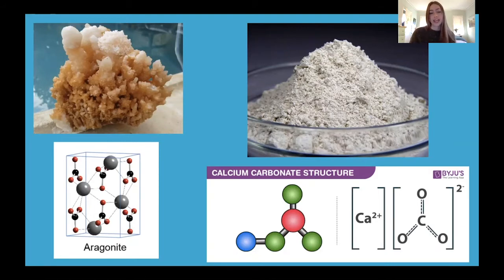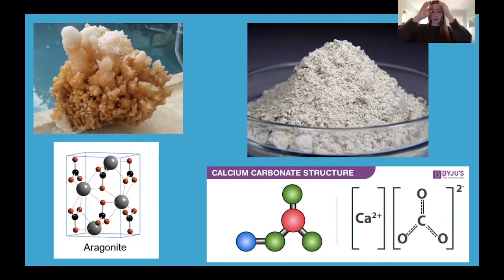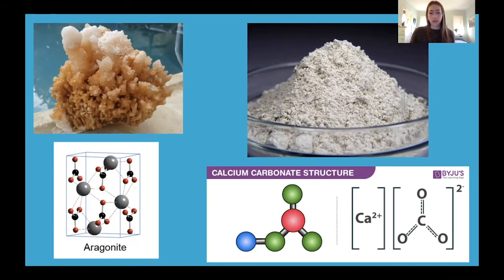Calcium carbonate is a chemical compound with a tetrahedral molecular geometry. It appears as a white odorless powder and is practically insoluble in water. Calcium carbonate is also found in chalk, limestone, and many other marine organisms.